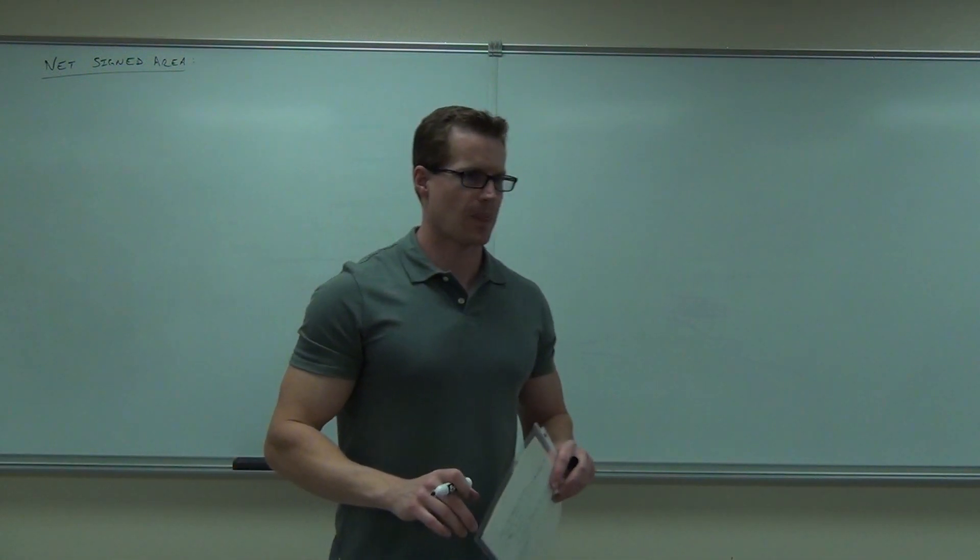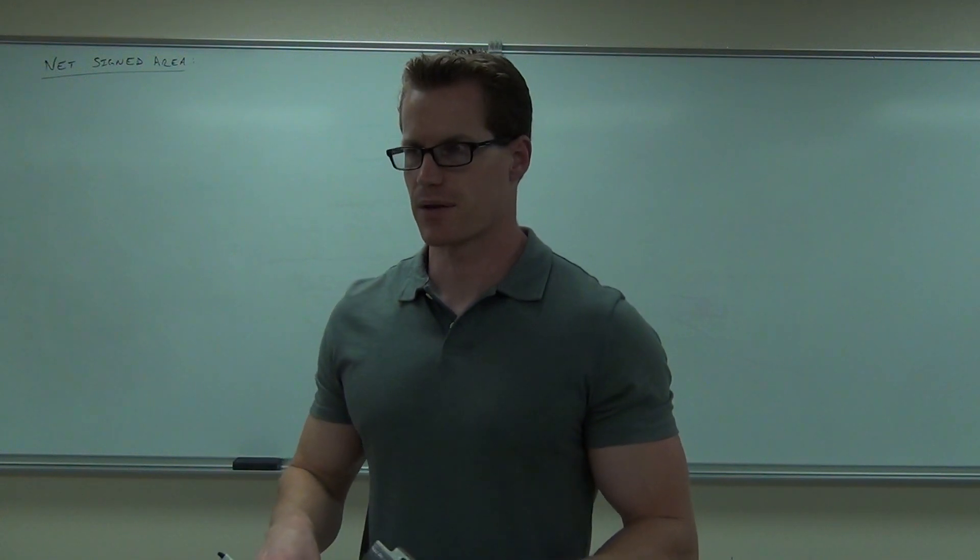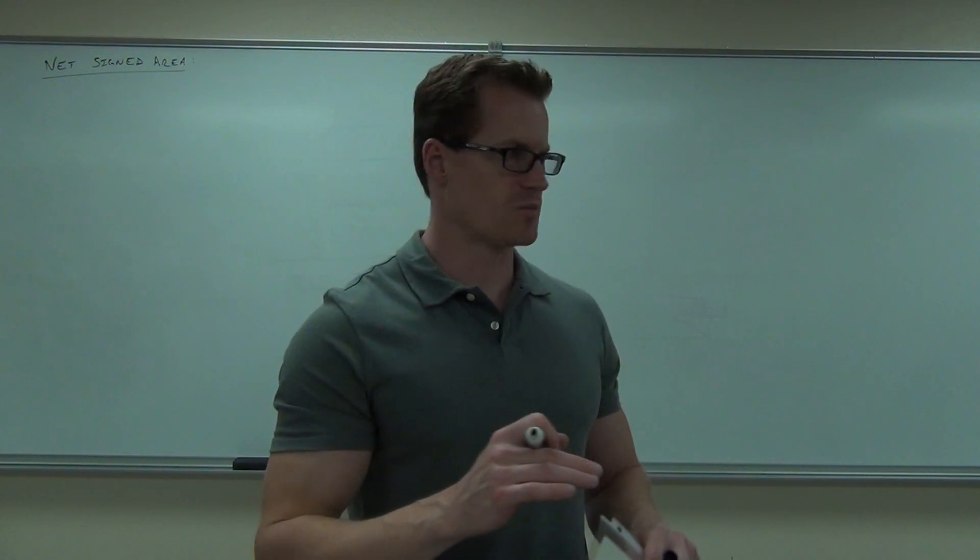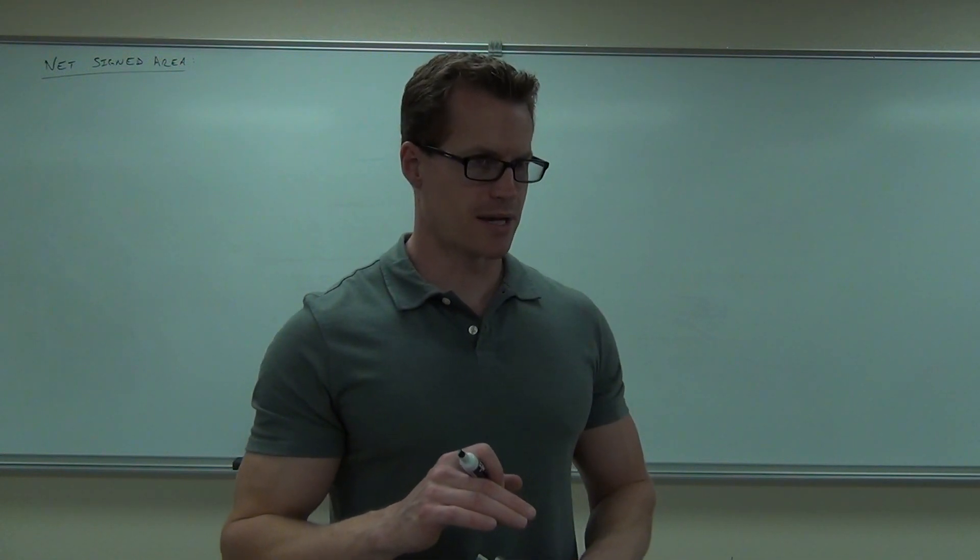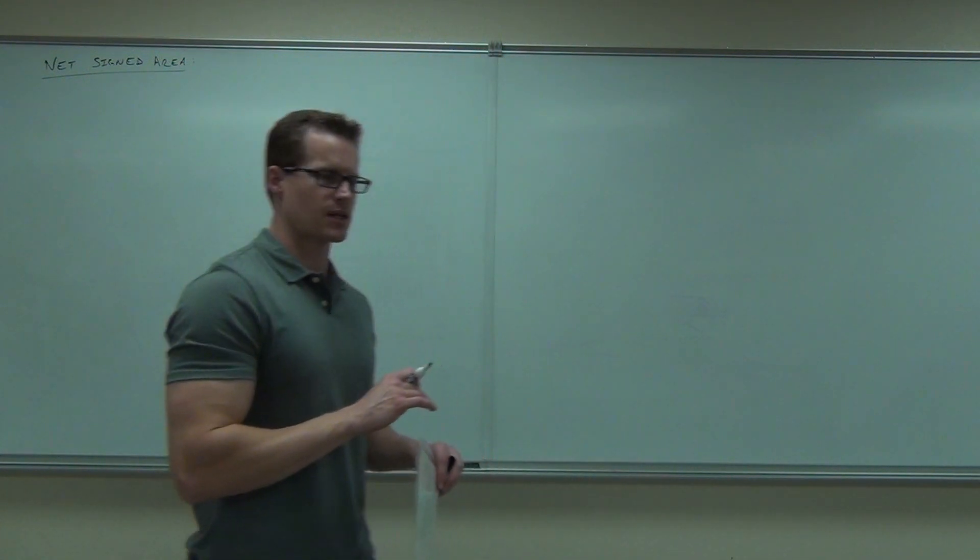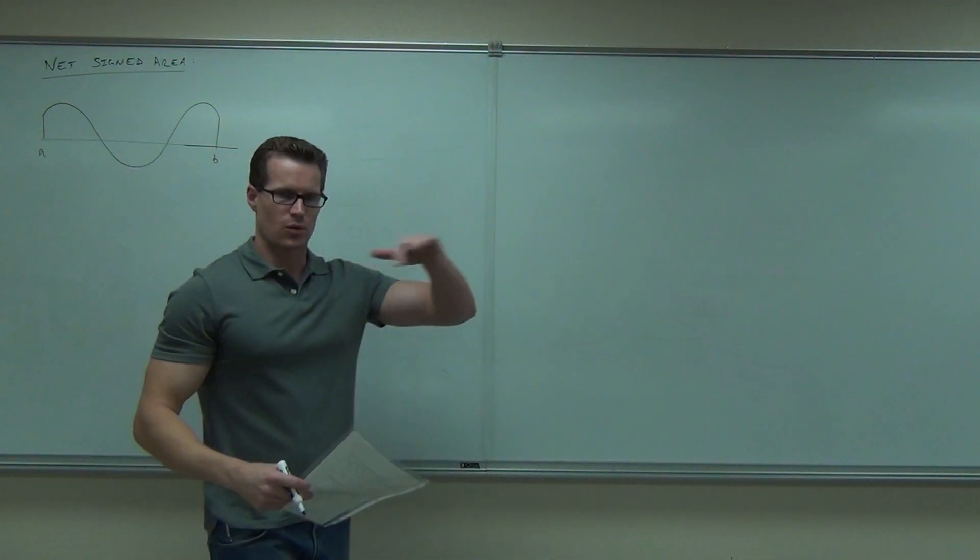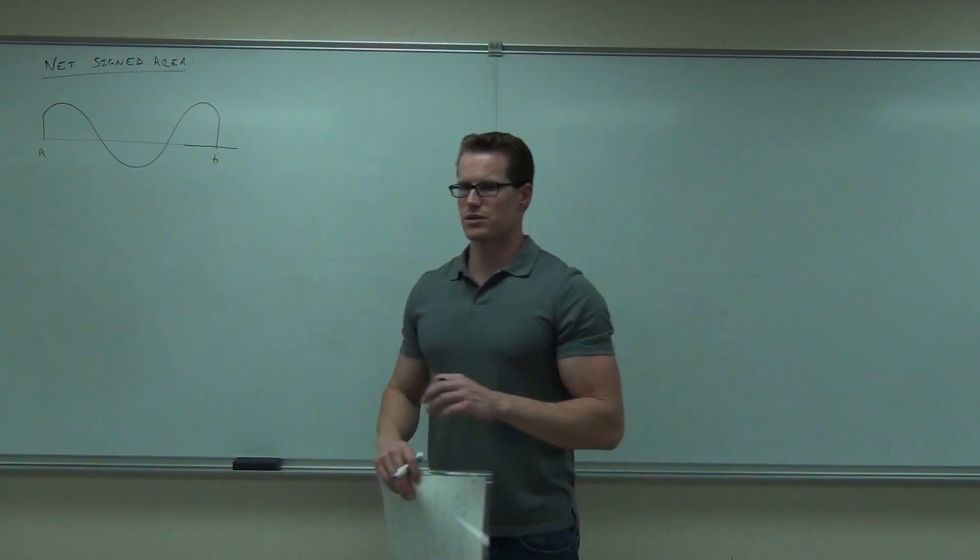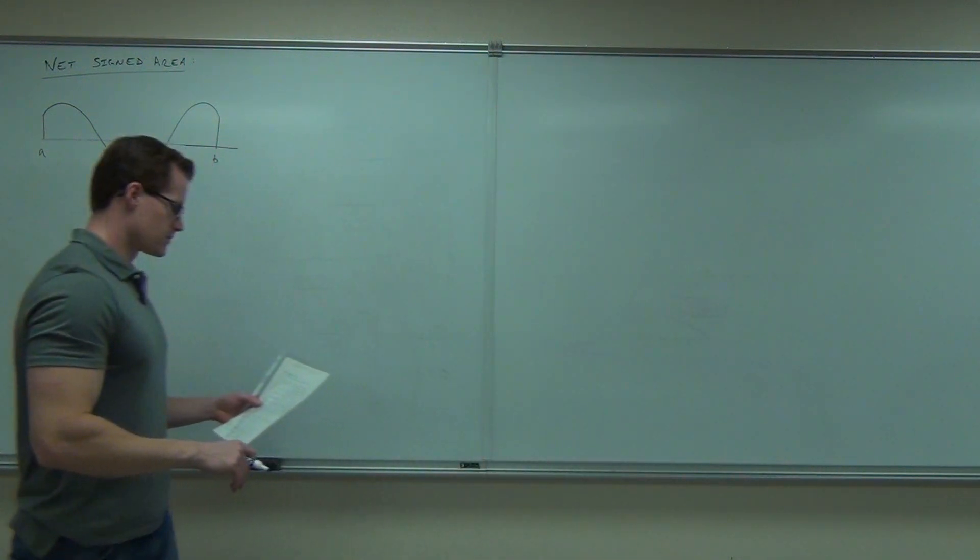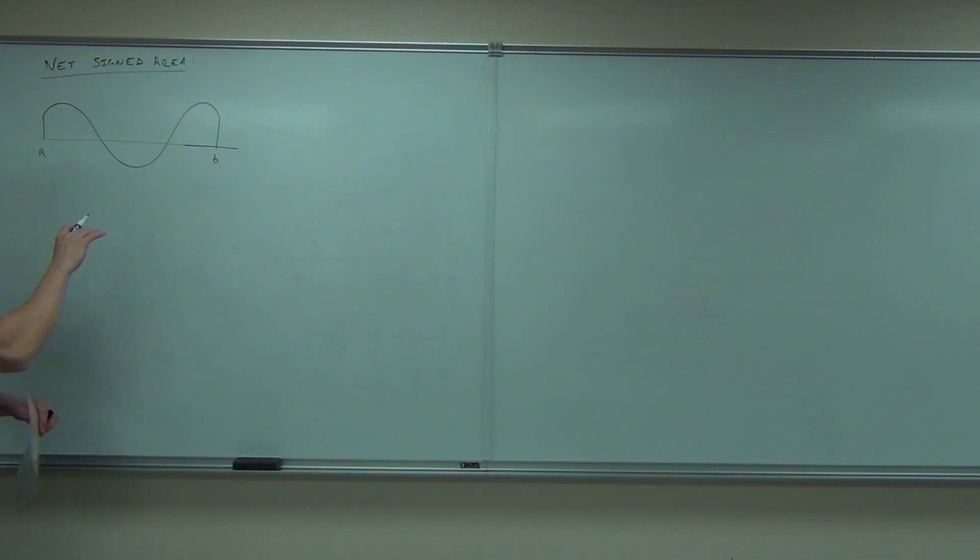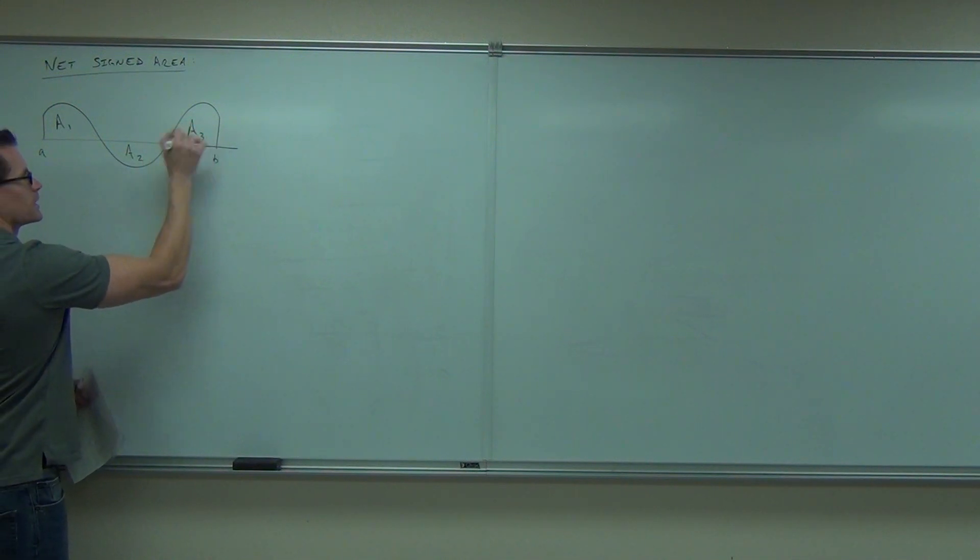Here's what net signed area says. Before, every function we've had until right now, figuring out the area, has been completely above the x-axis. You might not have realized that, but we haven't had one that's below the x-axis. Here's what net signed area says. If I have this curve, and let's pretend that the horizontal is the x-axis. How many areas do I have? Distinct areas? There would be three. Between the function and the x-axis there's area one, area two, and area three.